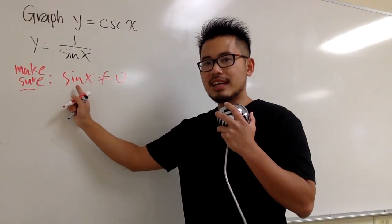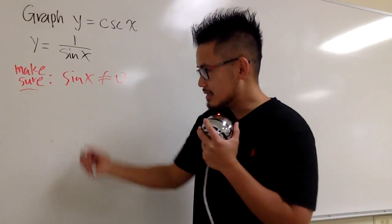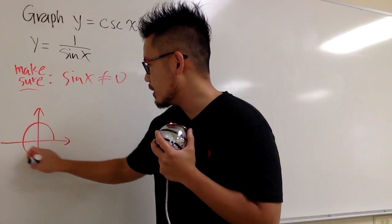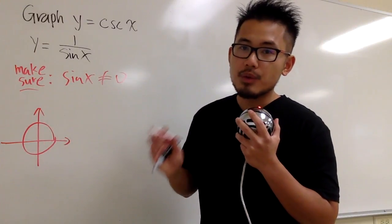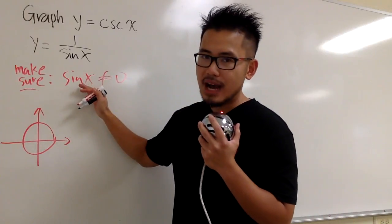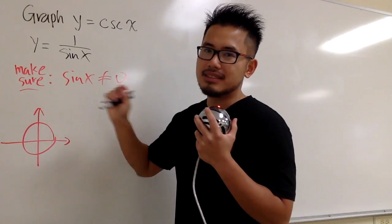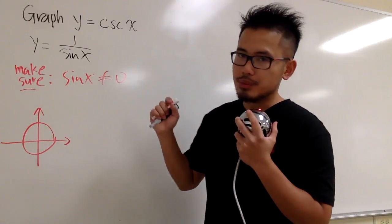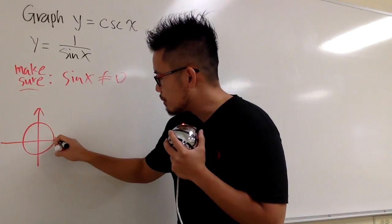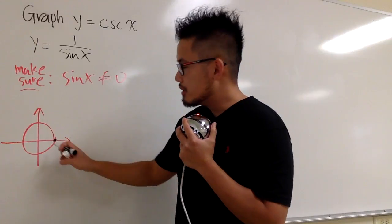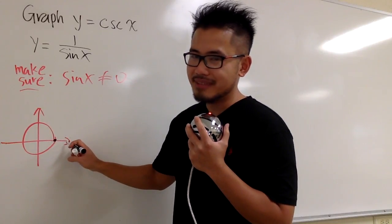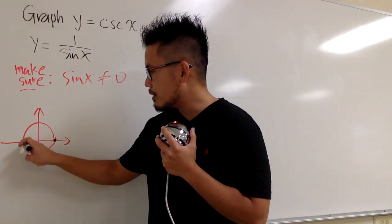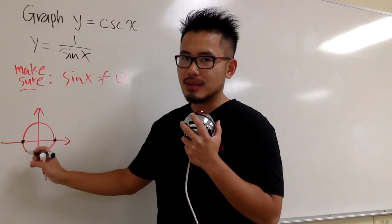So let's put down, make sure the bottom, which is sine x, we don't want this to be 0. So this is how we look for the domain in the fraction situation. And now, sine of what angle is 0? Let's look at the unit circle. So here we go, this is my unit circle, but this time, we have to look for the y value, because sine is the y value on the unit circle.